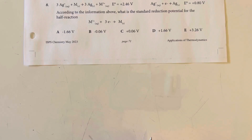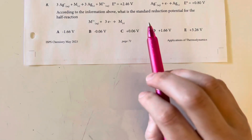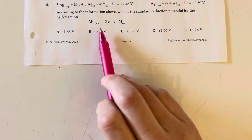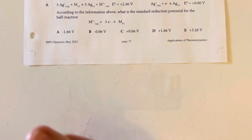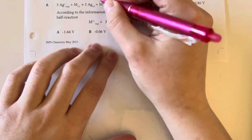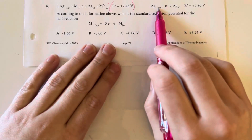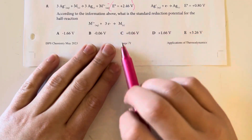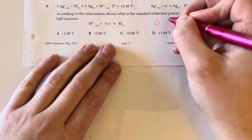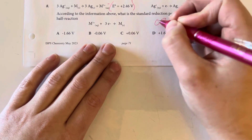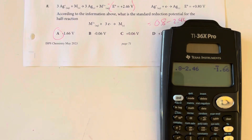According to the information above, what is the standard reduction potential for the half-reaction of this metal? We need to flip the overall reaction since the metal needs to be charged on the other side. Since this is non-spontaneous, we add the values together: 0.8 plus negative 2.46 gives negative 1.66 volts.